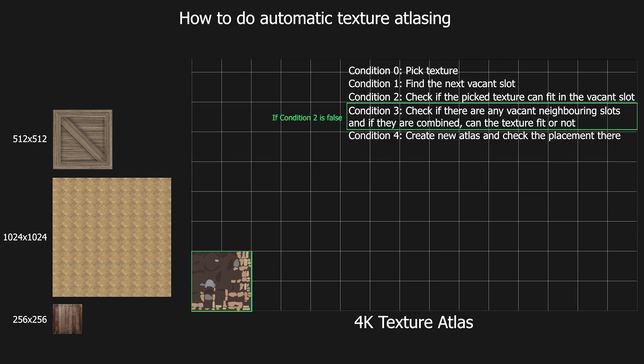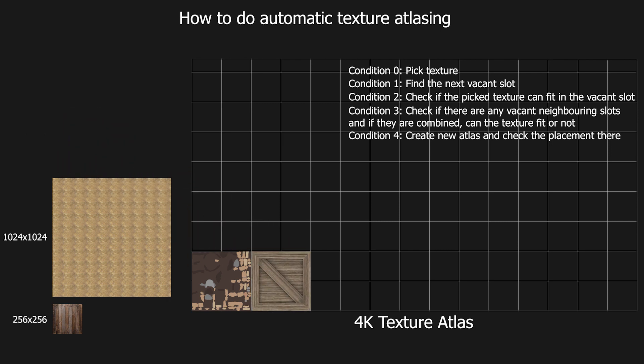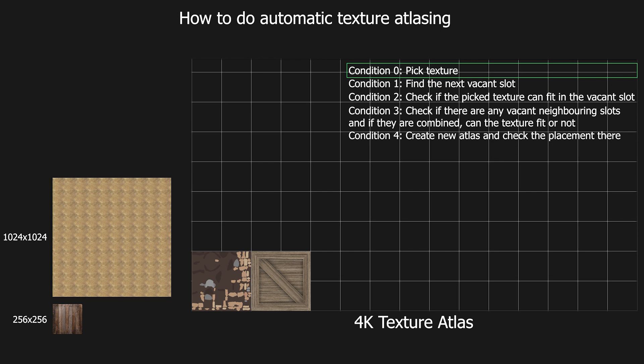We'll place this texture in the combined area and pick the next texture. The placement of this second texture is very similar since it is the same size, so let me quickly place this one. Now let's see the placement of the third texture in detail, since we'll have to check some non-immediate neighboring slots to make it fit. On searching for the next vacant slot, we get a slot with ID 4.